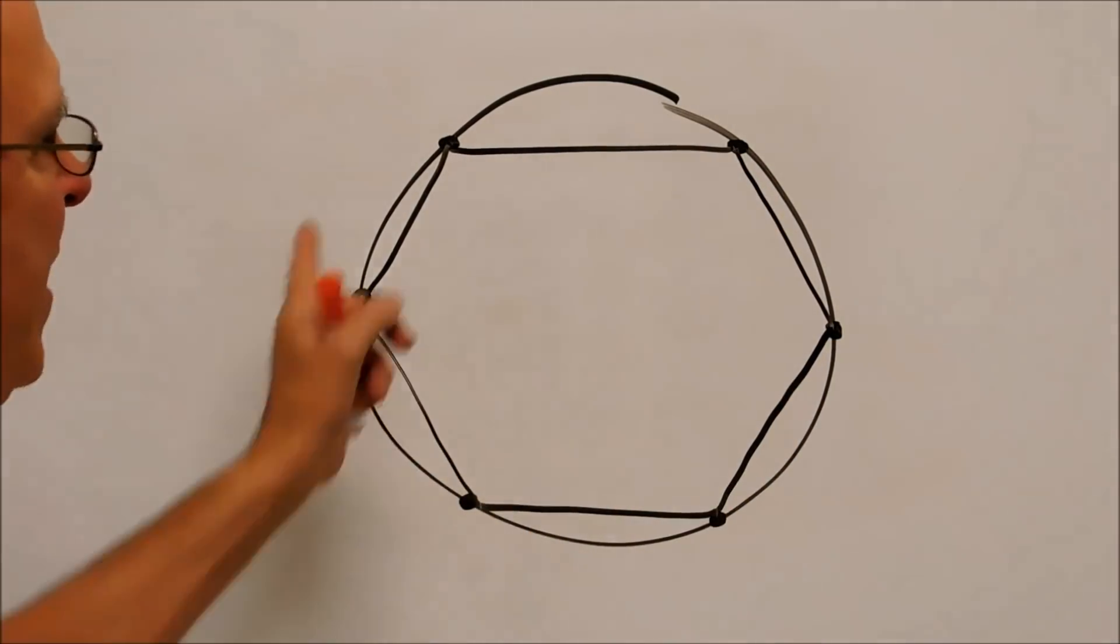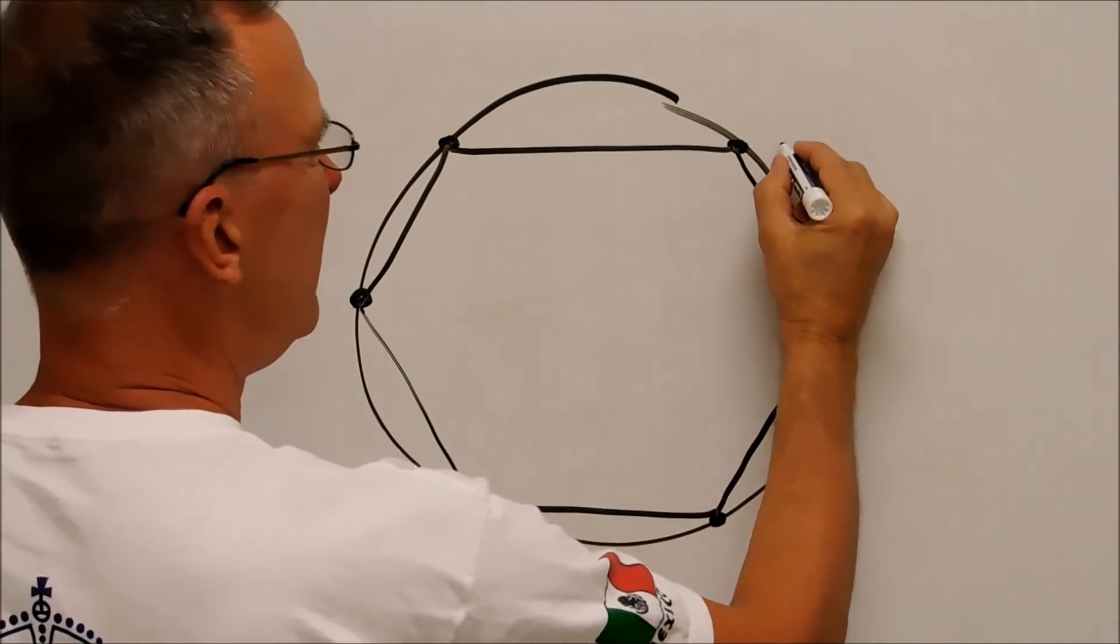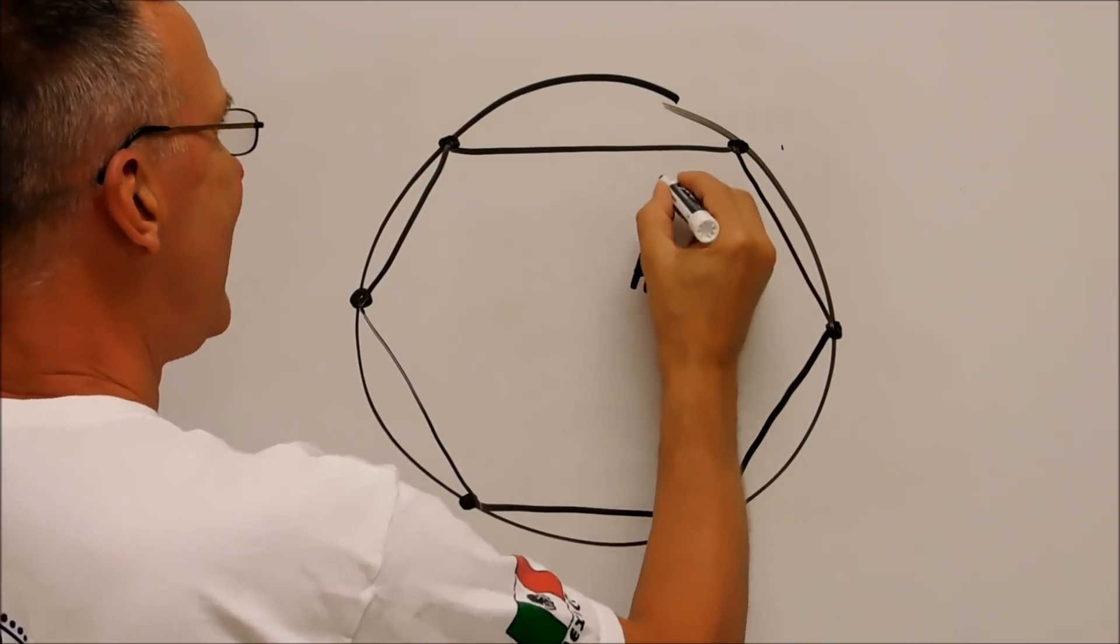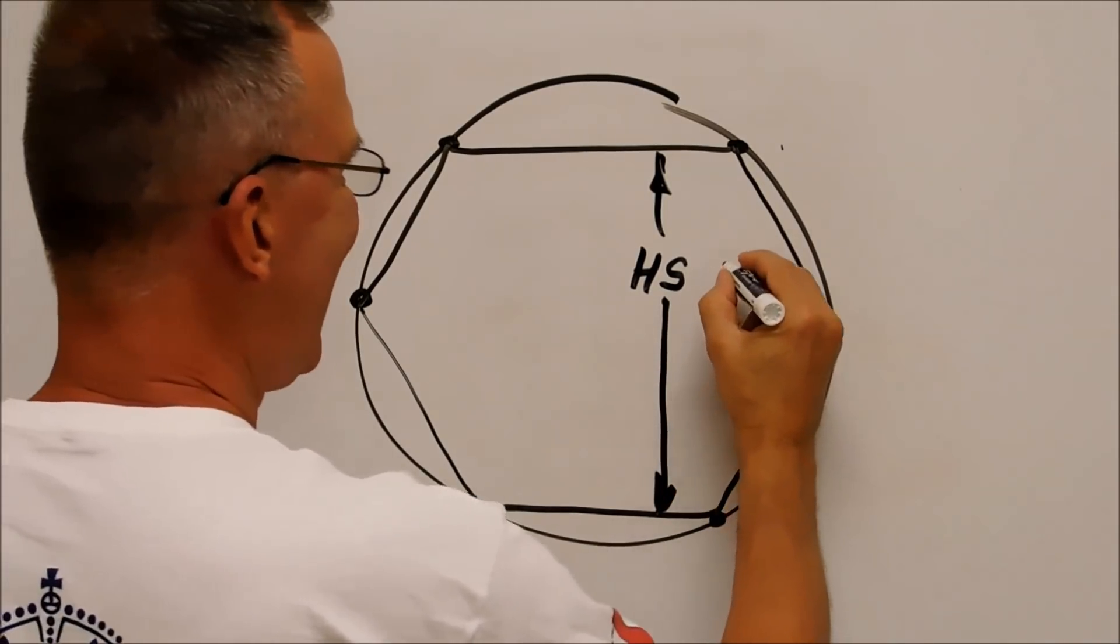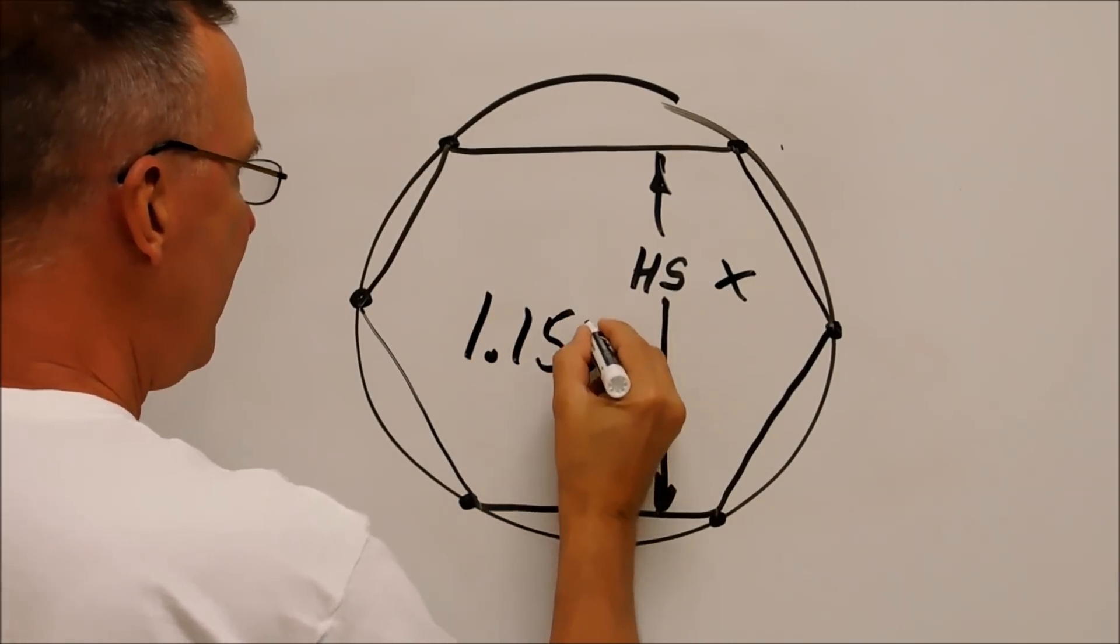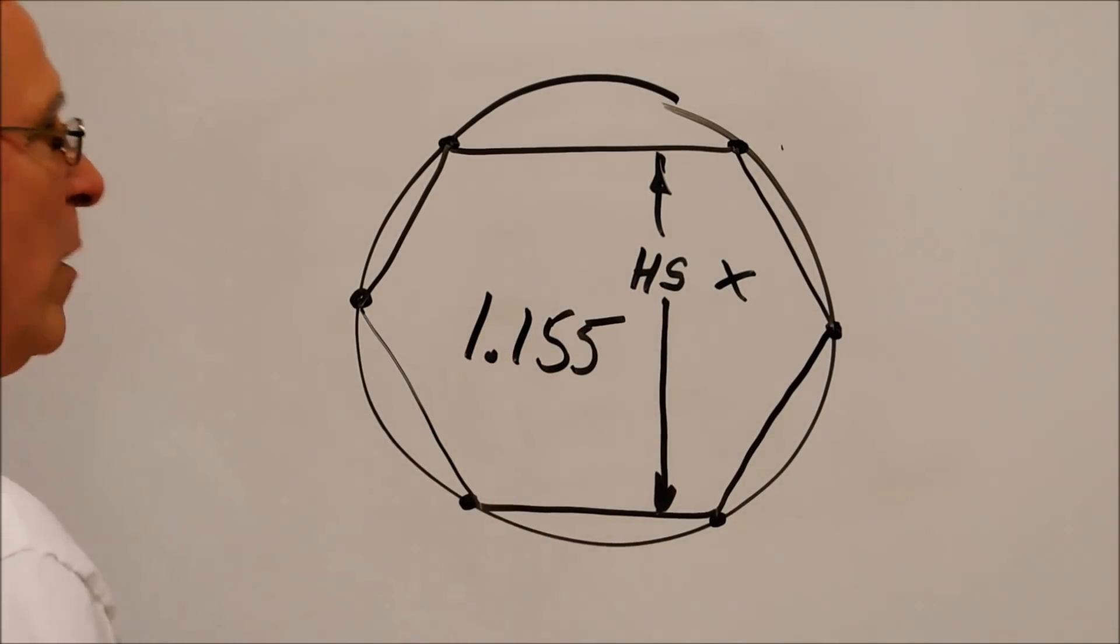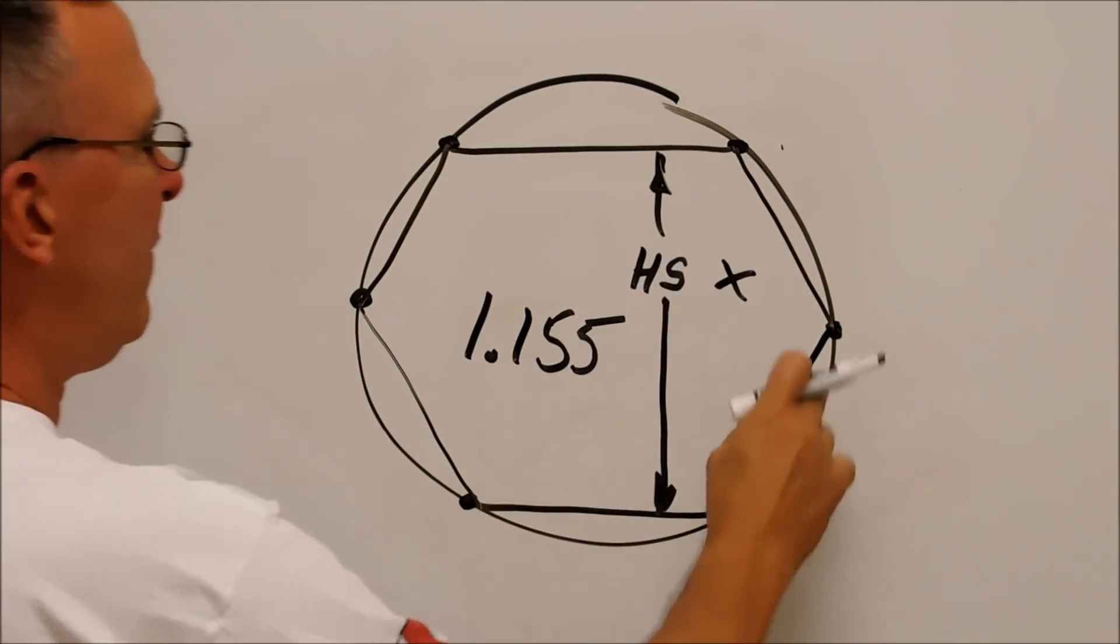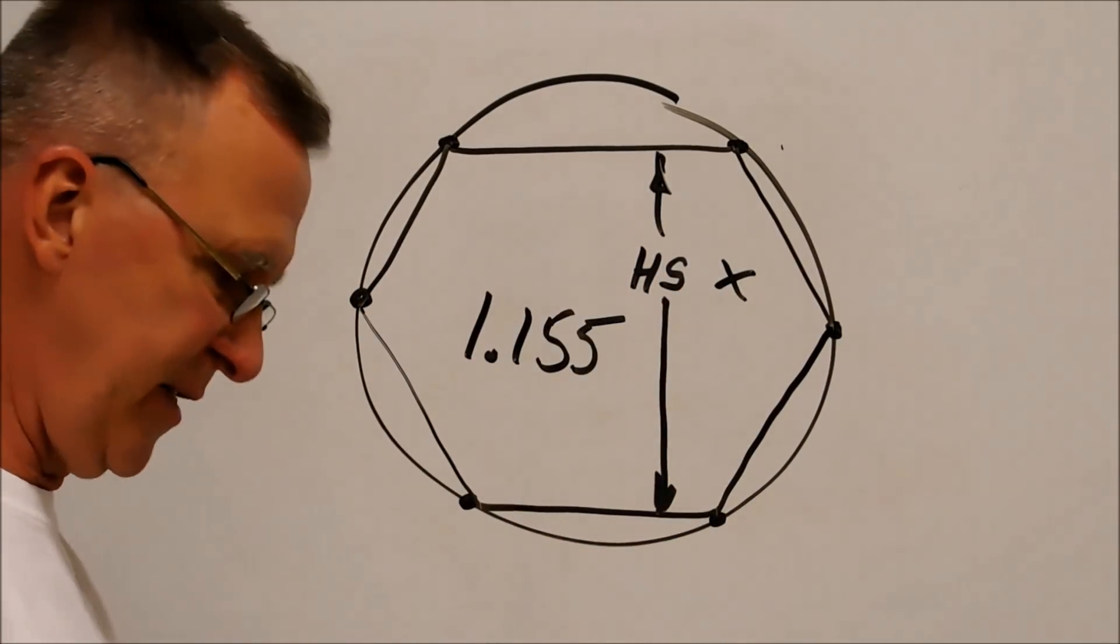What is the starting diameter to make a hex out of a piece of round stock? Simple. Piece of cake. Hex size—let's call it HS—hex size. Flat to flat. Times, here comes the magic number: 1.155. Hex size times that number right there, 1.155, will give you a diameter capable of producing the hex to the size that you start with.